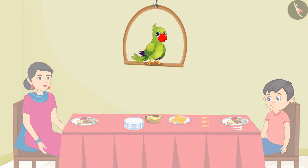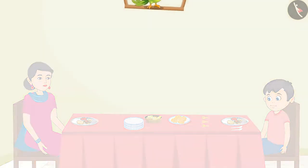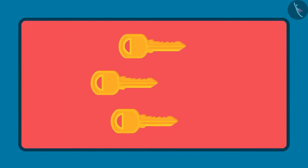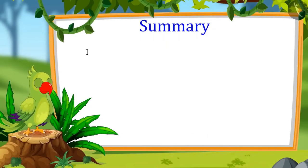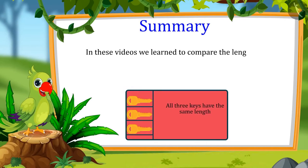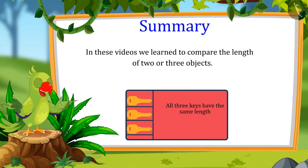So kids, now you also won't make a mistake in comparing the length of two or more objects like Chotu. Always remember that before comparing the length of objects, first we should keep the objects together so that one end of all the objects is together, and then the lengths of these objects should be compared. That's all for today. In these videos, we learned how to compare the length of two or more objects. I hope that you have understood this topic very well, friends. Bye-bye.